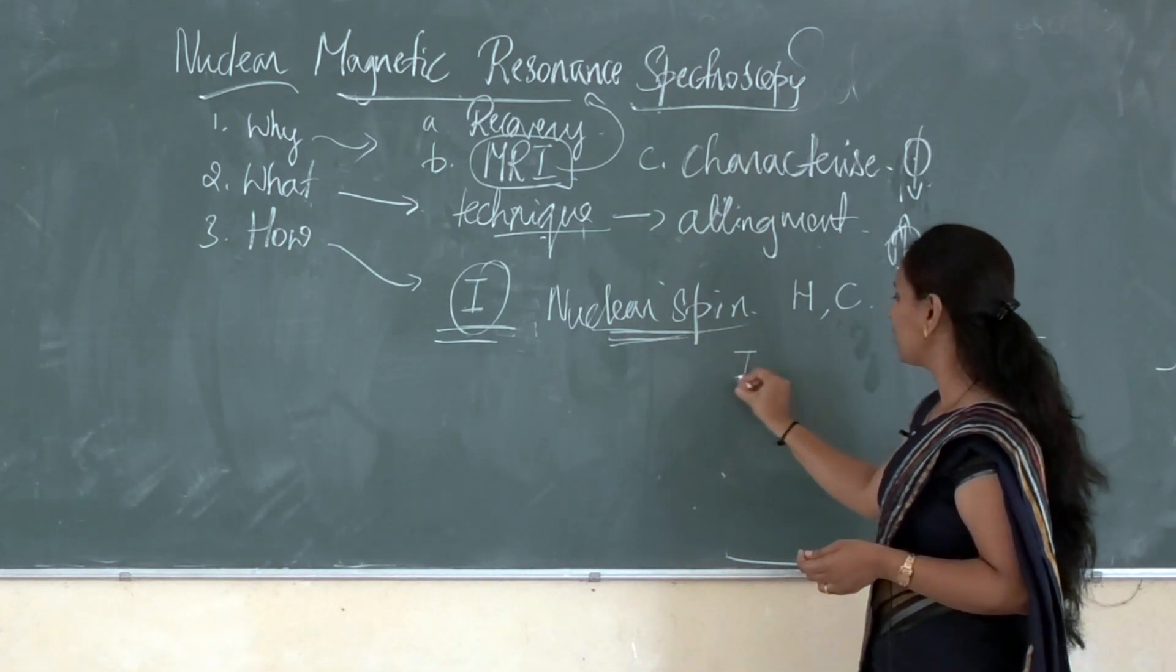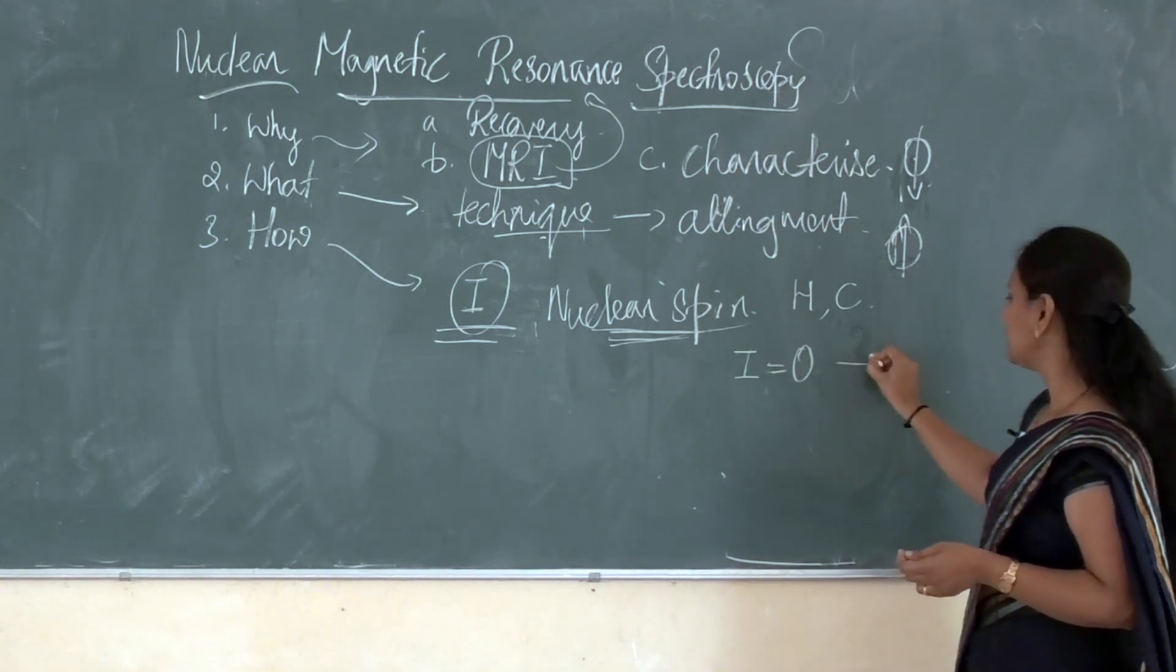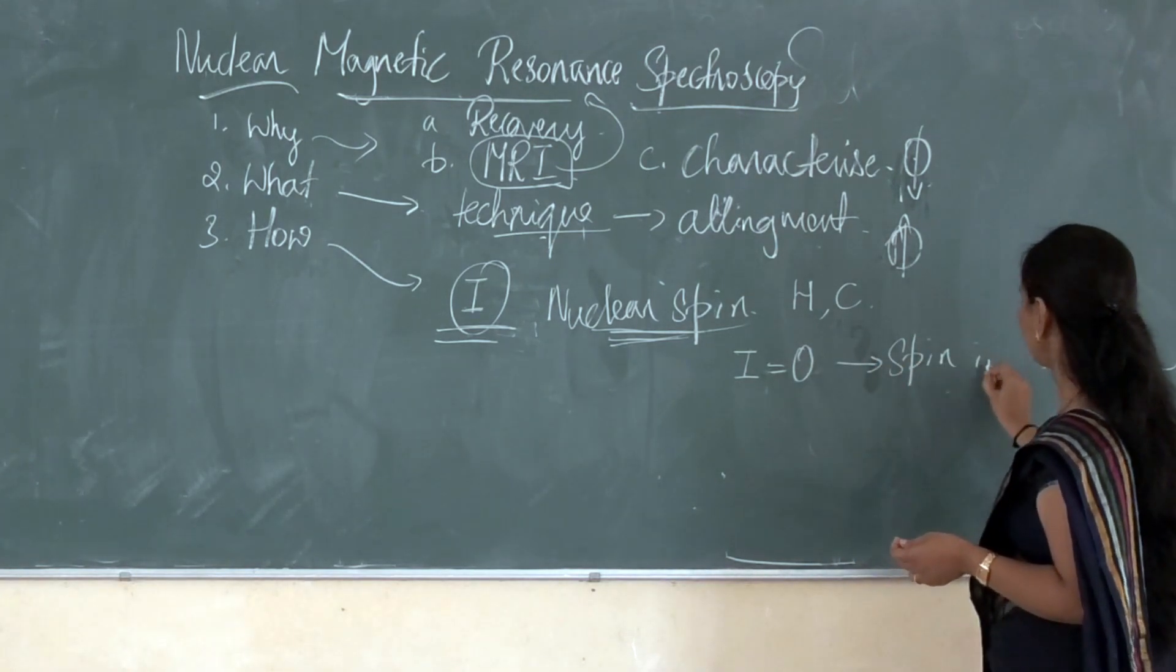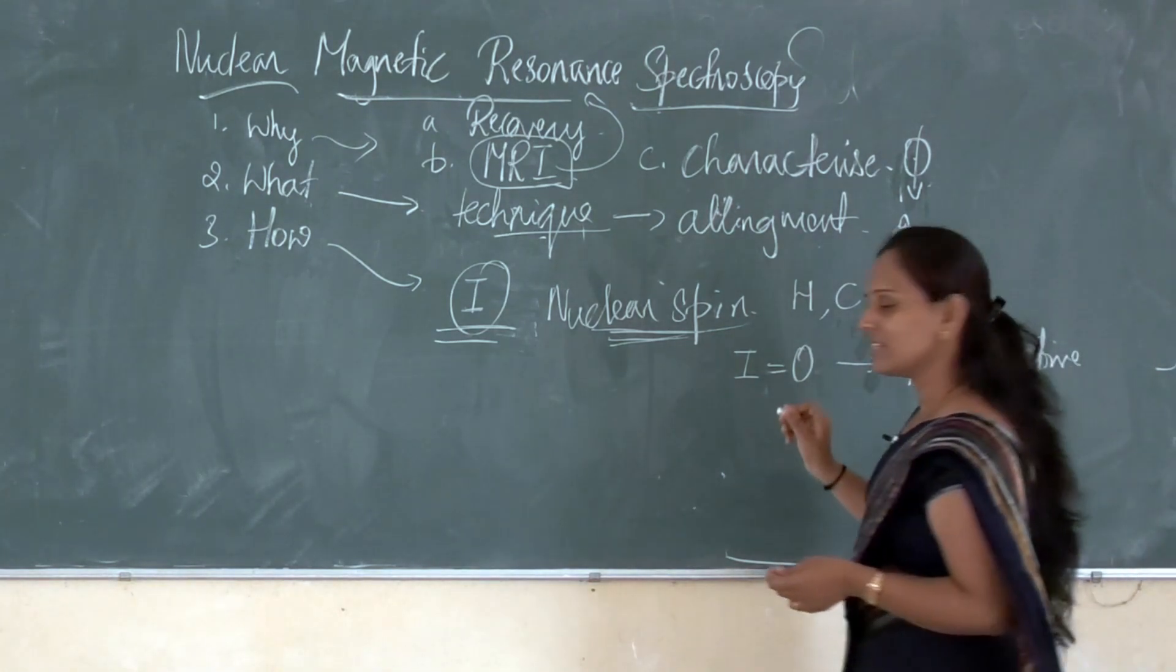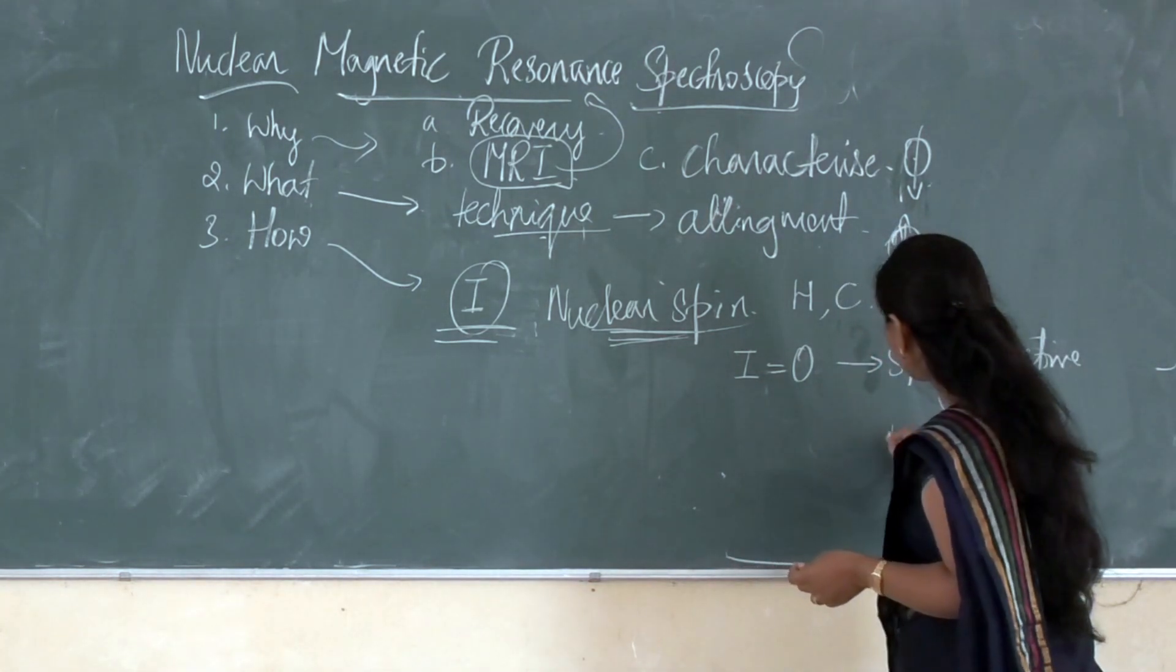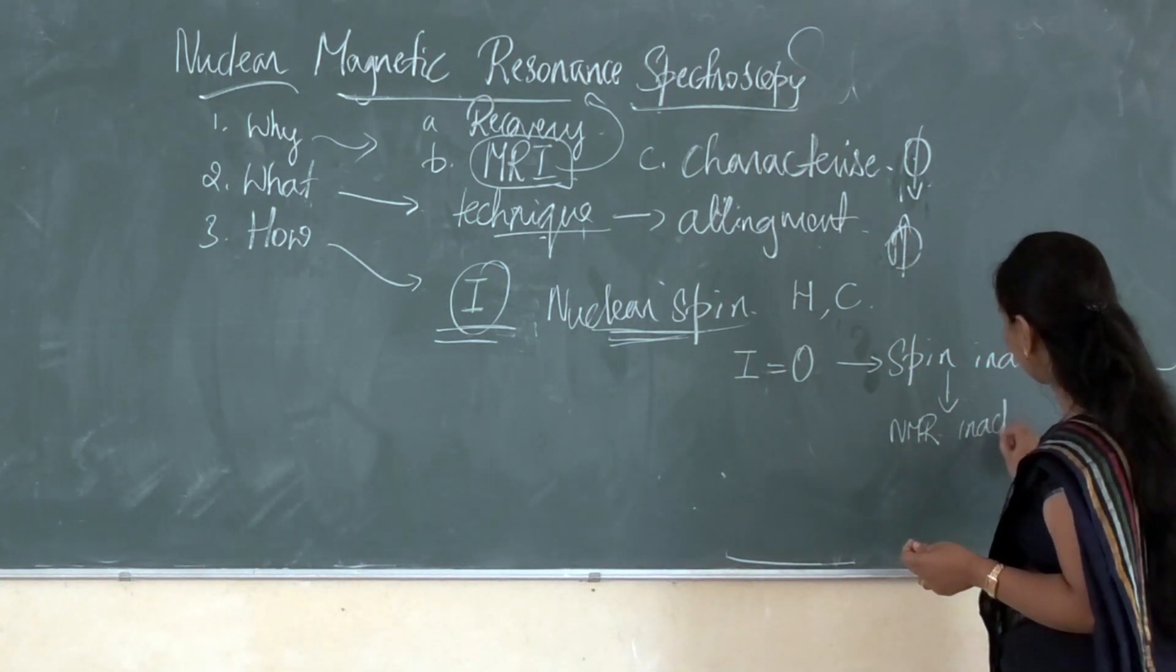If the nuclear spin of a nuclei is equal to zero, this is called as spin inactive. Spin inactive is nothing but, these samples will not show NMR signal. So, it is NMR inactive.